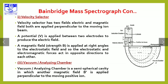S1 and S2 are two slits. The electric and magnetic fields in the velocity selector are adjusted so that only ions with a specific velocity pass through.